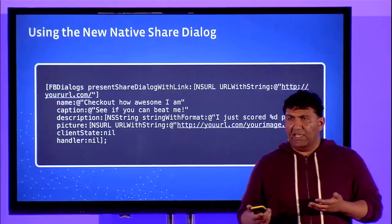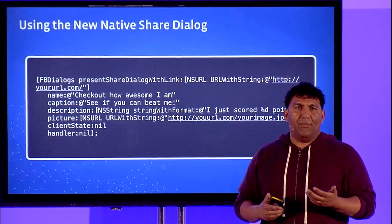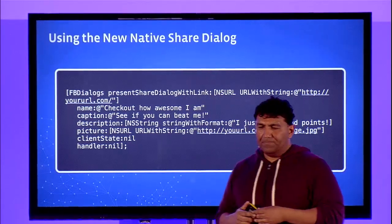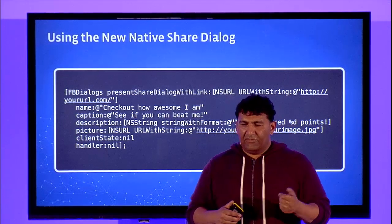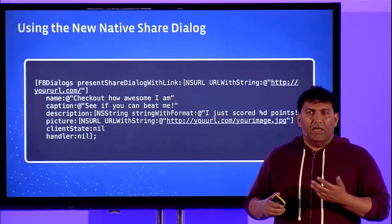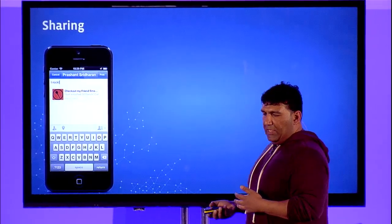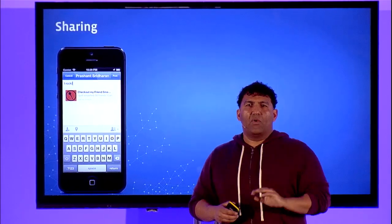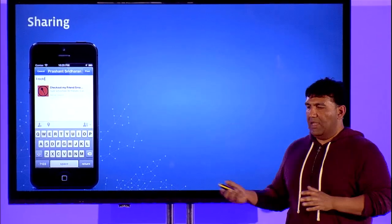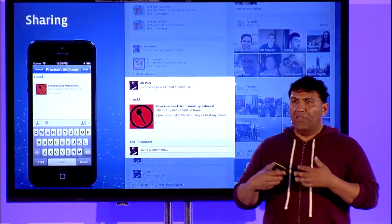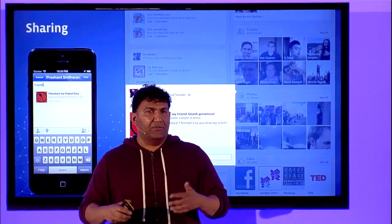Now let's talk about sharing. Sharing enables a player to brag about what they've done inside your game and share important moments they've accomplished. To do that, we're going to use the new native share dialog. This was announced two weeks ago in New York. It's available in iOS SDK 3.5 and requires that the latest Facebook app — Facebook app 6.0 or higher, from April 2013 — is installed on your device. The new class is FBDialogues, and you invoke FBDialogues presentSharedDialogBox with a link.